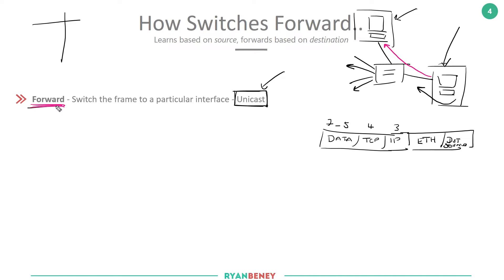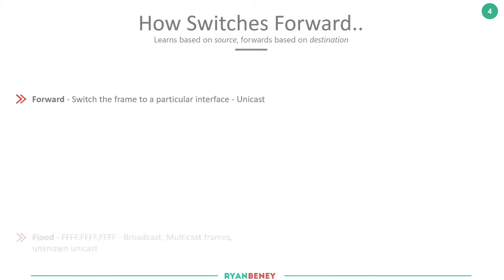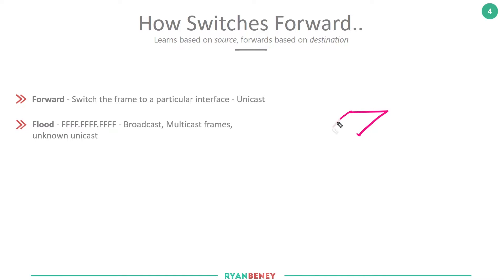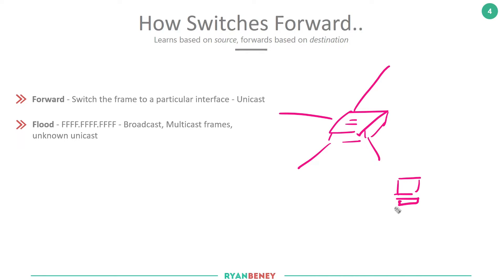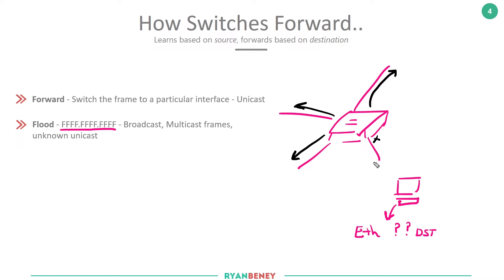The next option is to flood. If a PC creates a frame but doesn't know the destination, it can populate the destination MAC with the all-Fs broadcast address. When the switch sees all Fs in the destination field, it sends the traffic out of all interfaces except the one it was received on. This is called flooding, and the switch uses it to learn where hosts are in the network. This is an example of a broadcast.